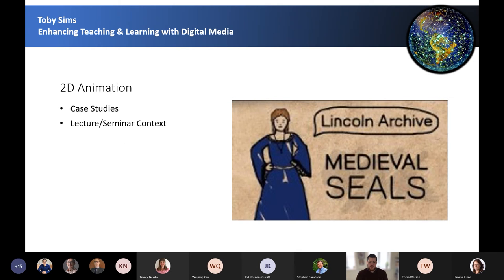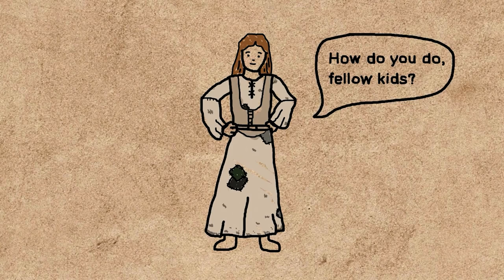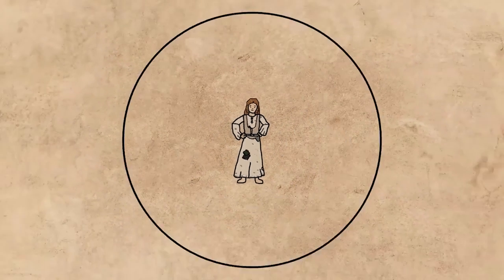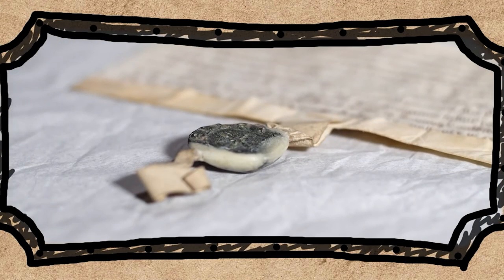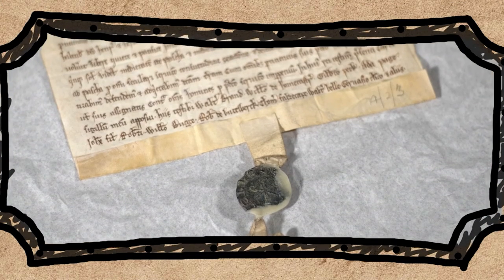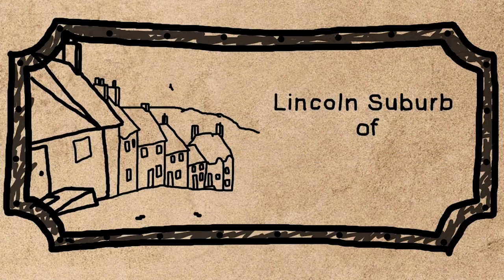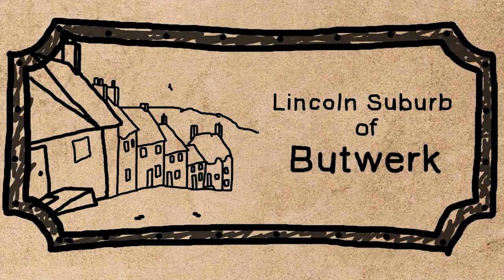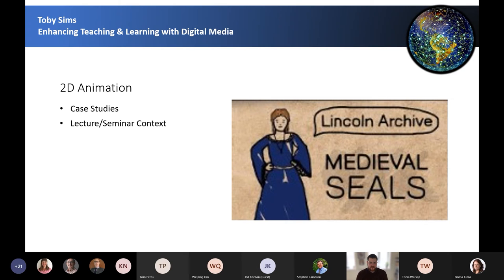2D animation can be used to a similar effect by adding dynamic visual elements to learning resources. Young Bella Heller became a woman of property at an early age. She emerged into the historical record of 13th century Lincoln as a businesswoman, buying and selling city centre land and increasing her sphere of influence. The best record of her growing stature? The waxed seals of deeds and documents which provide a glimpse into how Bella developed her identity as a businesswoman. Our story begins in the mid-13th century. It's also a blend of live action footage as well in that case.